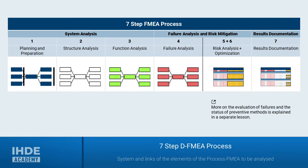The creation of an FMEA is divided into seven steps. Firstly, the planning and preparation, during which the scope and the limits of the FMEA are determined. Secondly, the structural analysis, followed by the functional and failure analysis. In steps five and six follow the risk analysis and the optimization with the status of recommended actions. At the end comes the results documentation. Steps five to seven — with the risk analysis, evaluation of failures, and status of recommended actions to mitigate risks — are the content of a separate lesson.